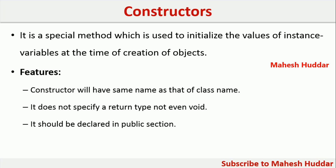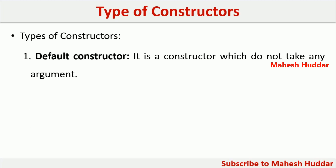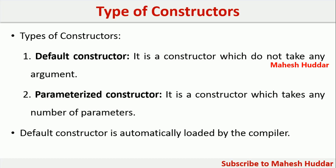Java has two types of constructors. The default constructor is one which does not take any argument — if you don't pass any argument to a constructor, it is called a default constructor. A parameterized constructor takes at least one parameter. If you don't specify a default or parameterized constructor in your class, by default Java will add a default constructor to the class.